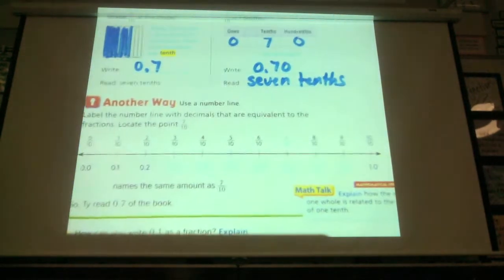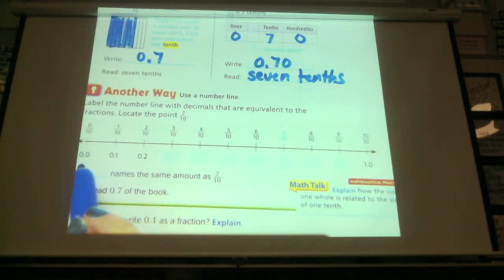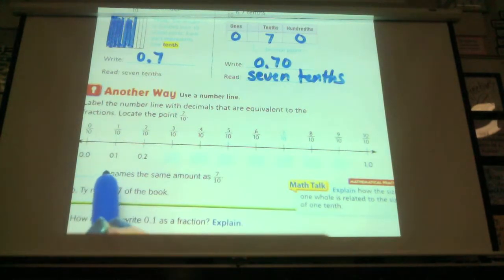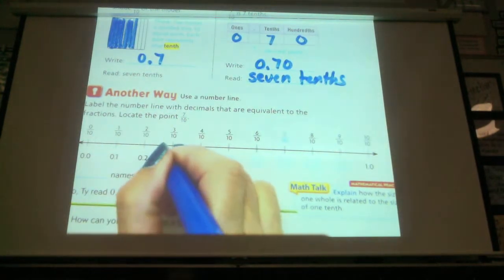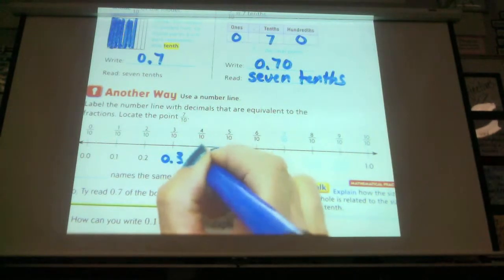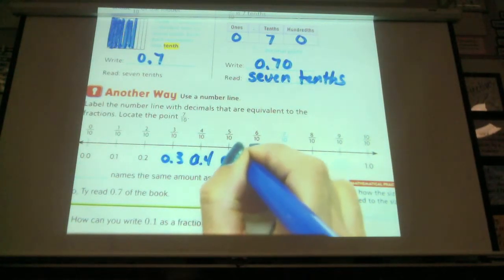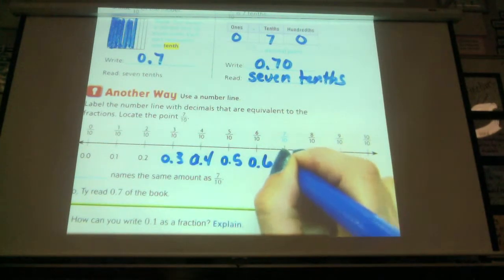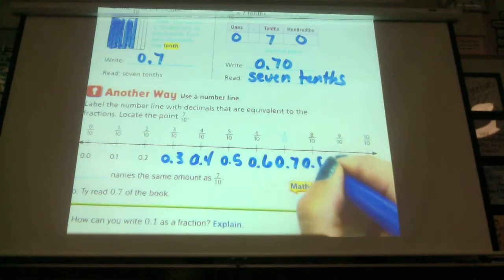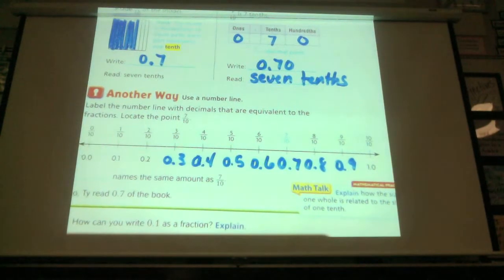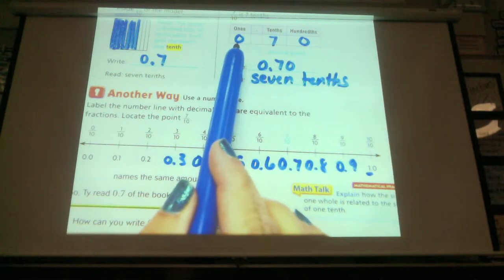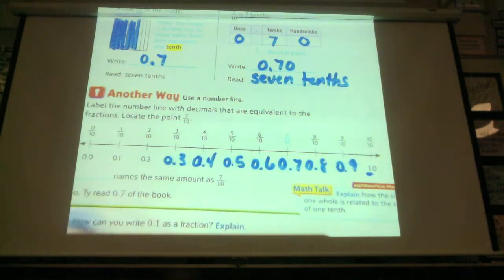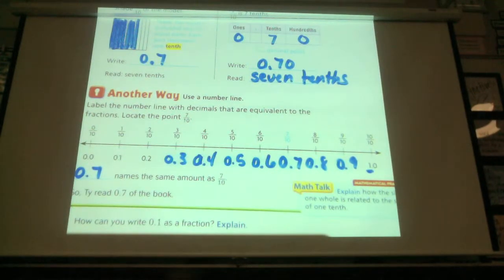Now looking at a number line, 0 tenths is like having nothing. We have nothing, so it's 0.0. 1 tenth, or like 1 dime. 0.1, 0.2. If we have 3 tenths, it would be 0.3. 4 tenths would be 0.4. 5 tenths would be 0.5. I'm sure you guys got this by now. 0.7, 0.8, 0.9. And then when you have 10 tenths, we know that 10 tenths equals 1 whole. So then the 1 whole goes on this side in the 1's place. If you were looking at your place value chart up here, it would go here in the 1's place. So again, 0.7 names the amount of 7 tenths.